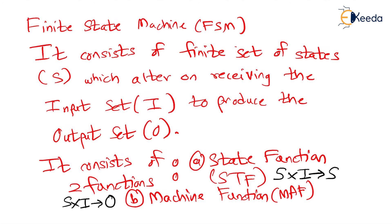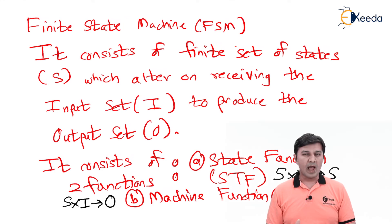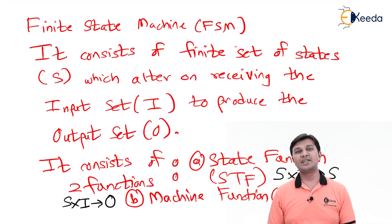That was a brief explanation of how the finite state machine works. To summarize: an FSM consists of a finite set of states S, which alters on receiving the input set I to produce the output set O. It consists of two functions — the state function, which says given a state and an input symbol what is the next state, and the machine function, which says given a state and an input what is the output. With this knowledge, we can go on to solving type one problems. Thank you, see you in the next video.